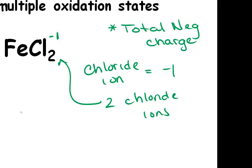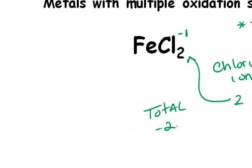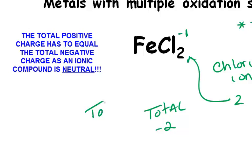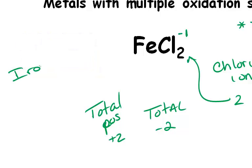This gives a total negative charge of -2, which means the total positive charge must be +2. Therefore, this is iron(II), and the compound is iron(II) chloride.